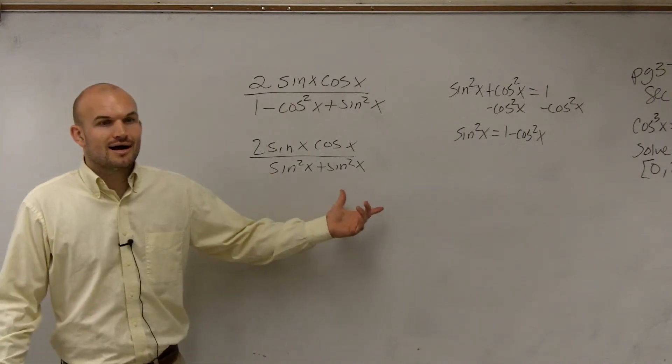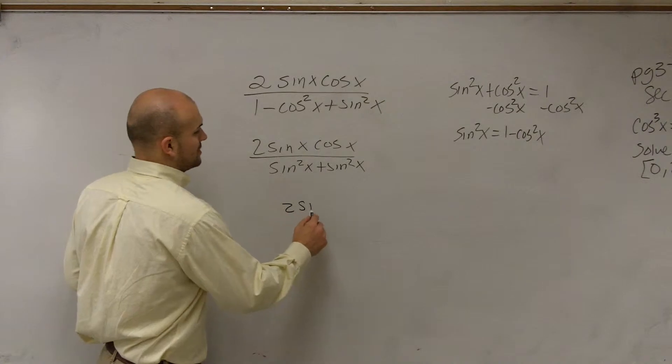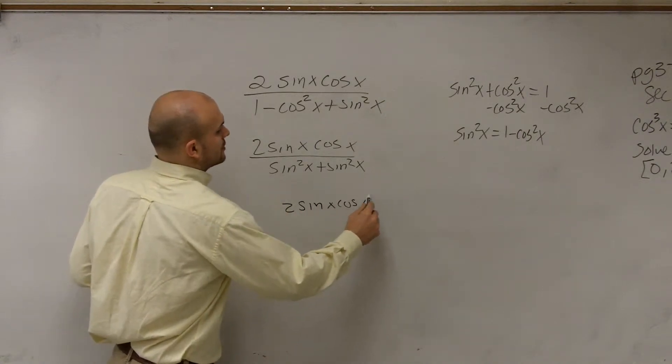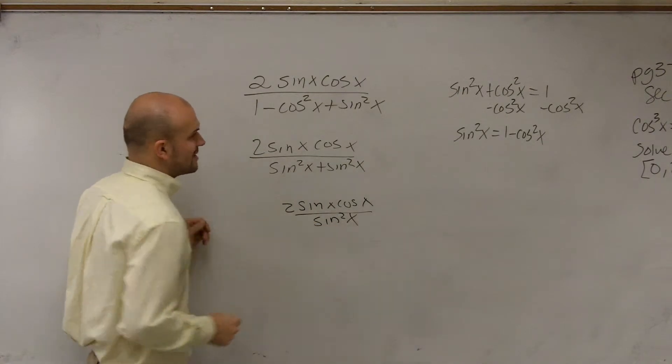Now, hey, that's cool, because now I have a binomial, but I can combine them, right? So now I have 2 sine of x cosine of x divided by sine squared of x.